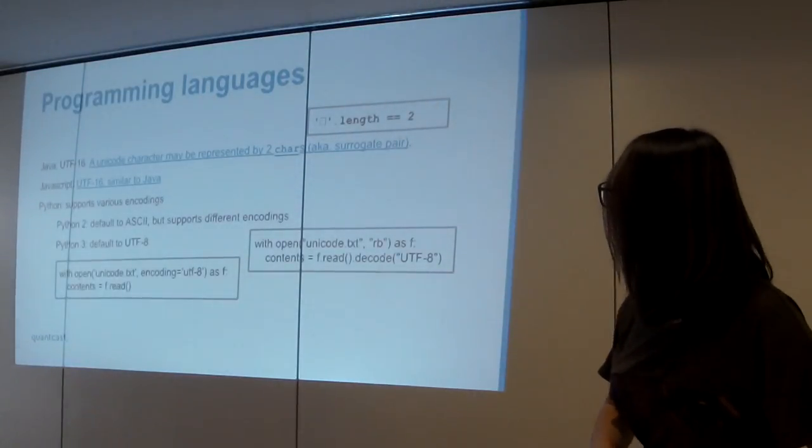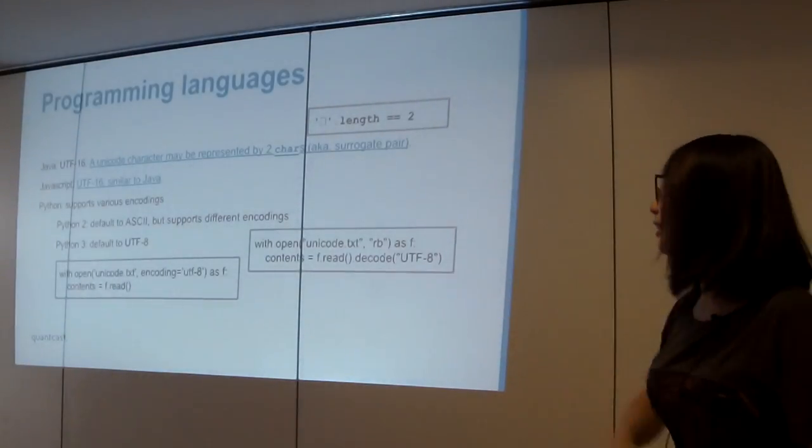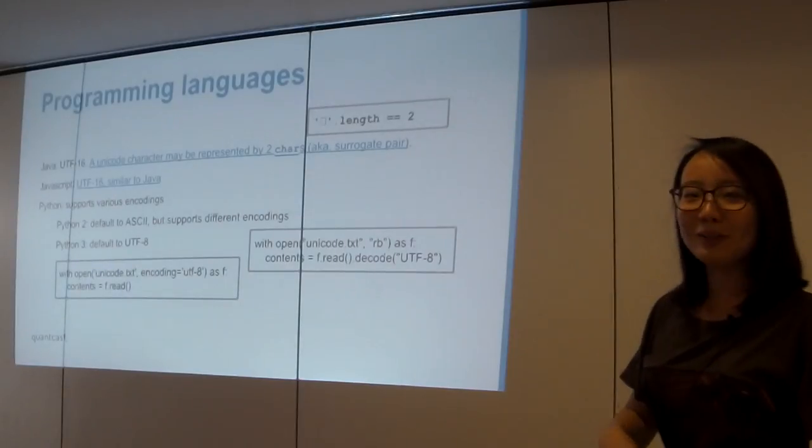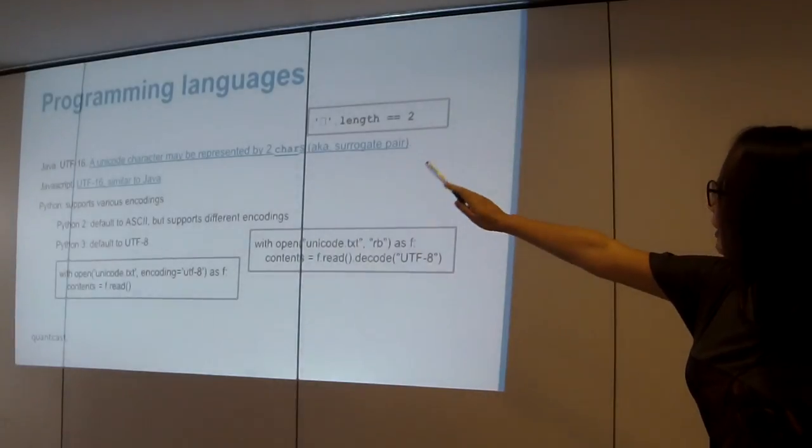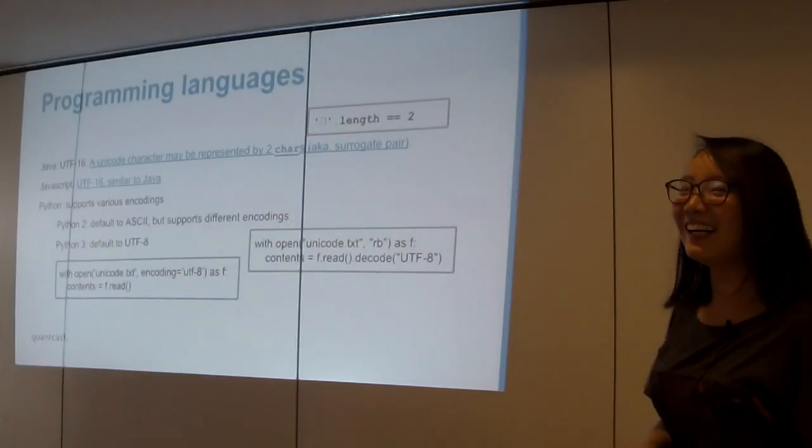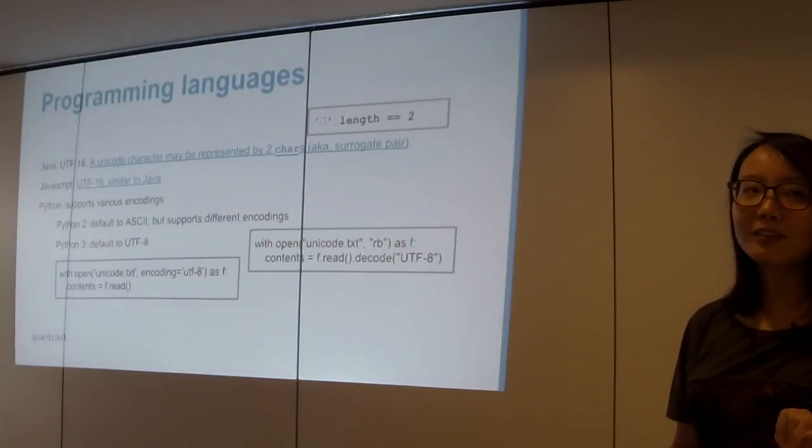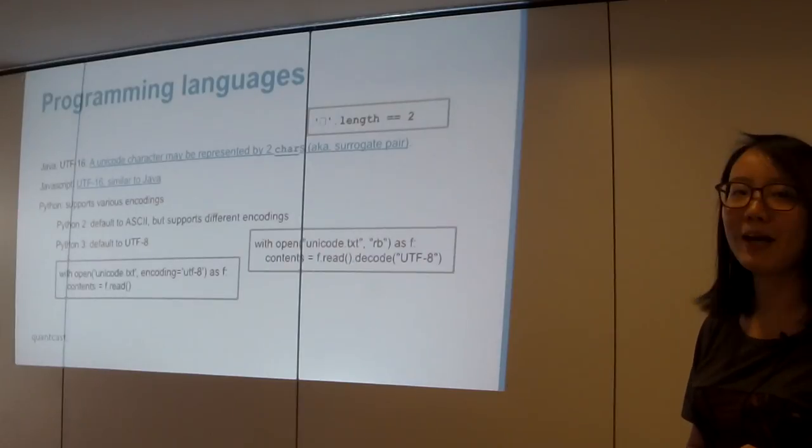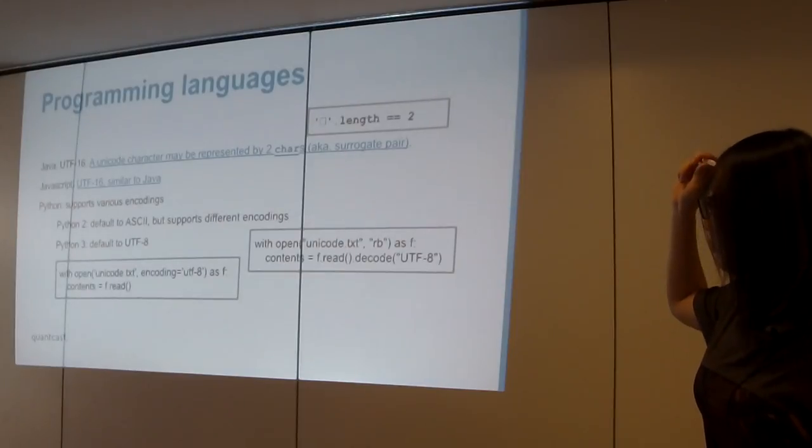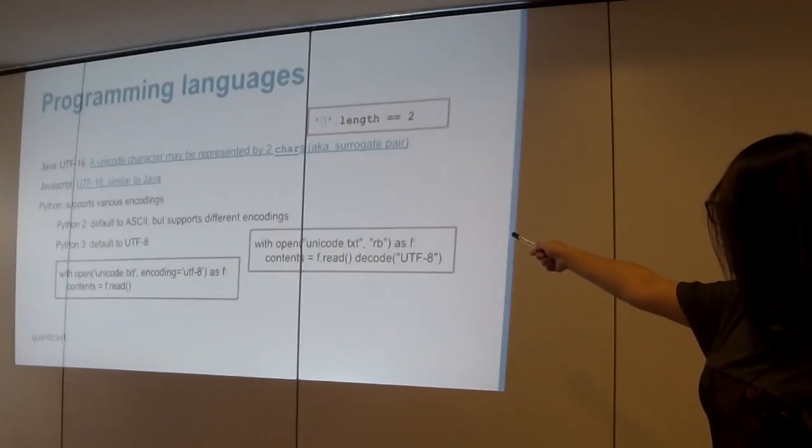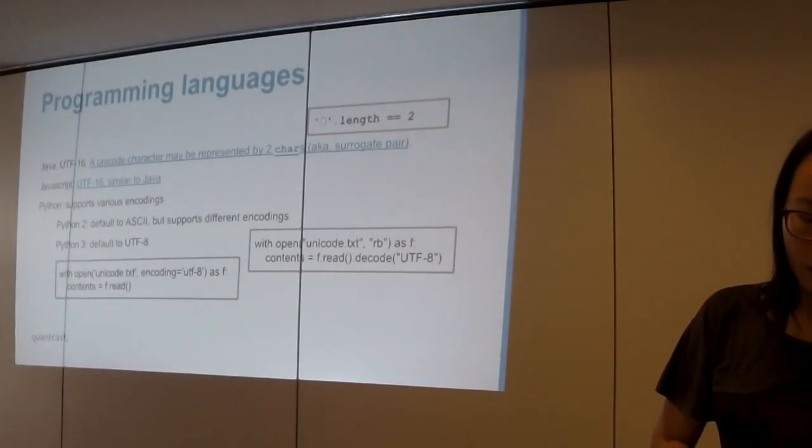So yeah, if you look at programming languages, Java, JavaScript, they both use UTF-16. Python, I don't know, just like Python. I did my research, but I still, to date, I don't quite know. Like what is their, I know because Java and JavaScript, their characters, their characters are backed using UTF-16. Well, Python has different character representations. I bet they're backed by different encodings as well. But Python 2, you just know that it defaults to ASCII, which is bad. So if you're still using Python 2, remember to specify the encoding when you read a file. And Python 3 defaults to UTF-8, which is much more sensible.